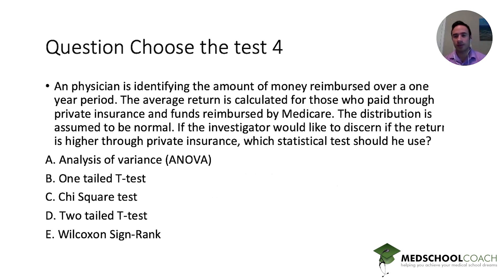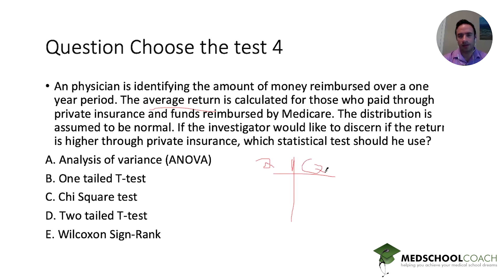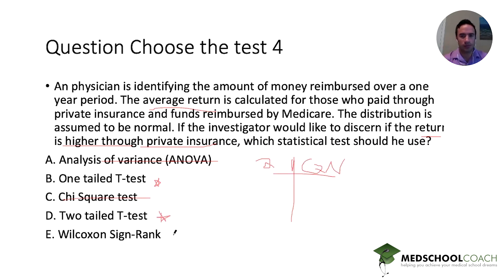Next question: a physician is identifying the amount of money reimbursed over a one-year period. The average return is calculated for those who pay through private insurance and funds reimbursed by Medicare. The distribution is assumed to be normal. If the investigator would like to discern whether the return is higher through private insurance, which statistical test should be used? We have two groups, average amount paid — quantitative data. A key point here: what's the goal? We want to see if the return is higher through private insurance — only one direction.